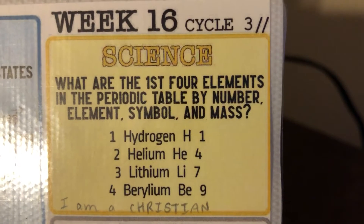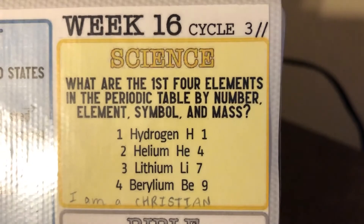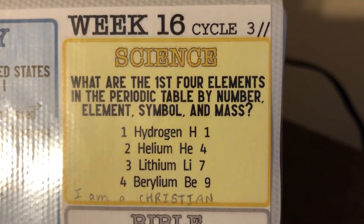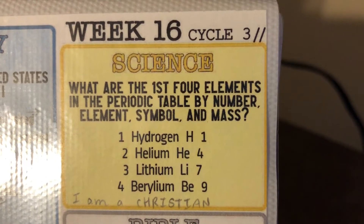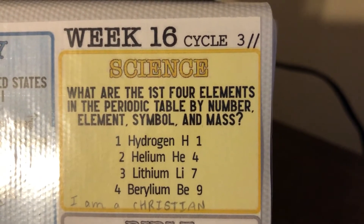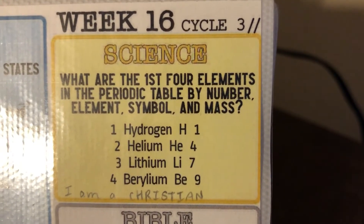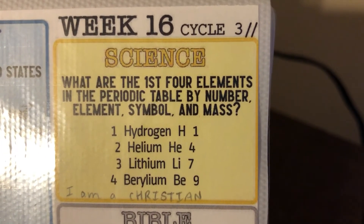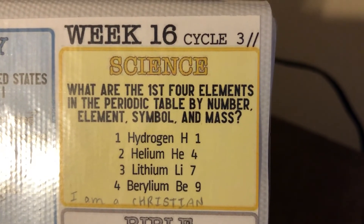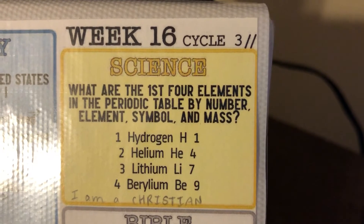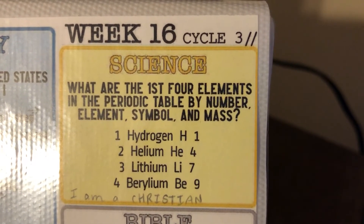The first four elements in the periodic table by number, element symbol, and mass: 1 – Hydrogen, H, 1; 2 – Helium, He, 4; 3 – Lithium, Li, 7; 4 – Beryllium, Be, 9.